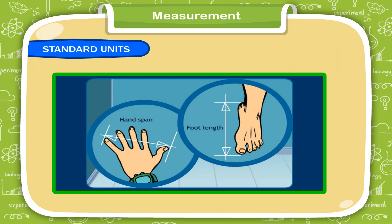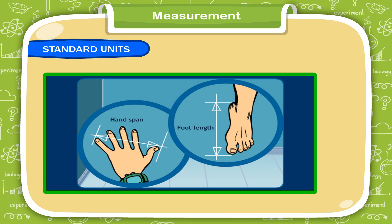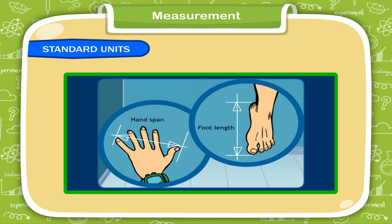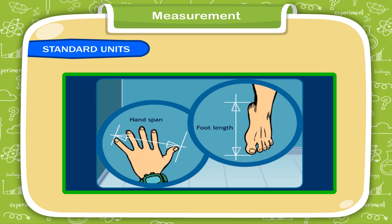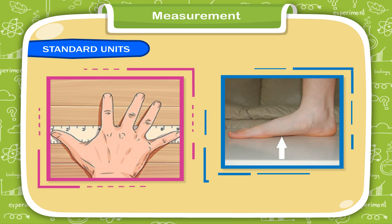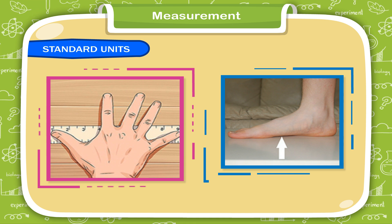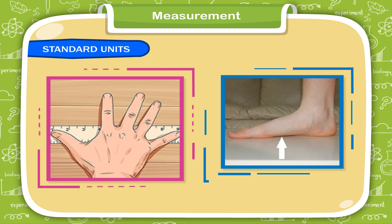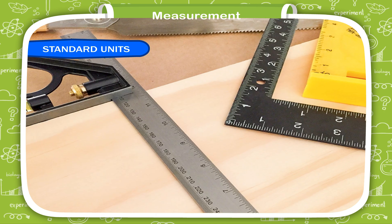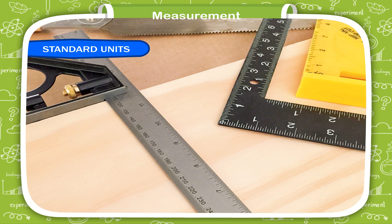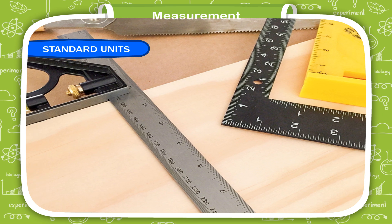Standard units. In ancient times, people used to measure lengths with their hands and feet. The measurements are different when different people use their hand span or foot span, because the lengths of the hand and foot are different from person to person.